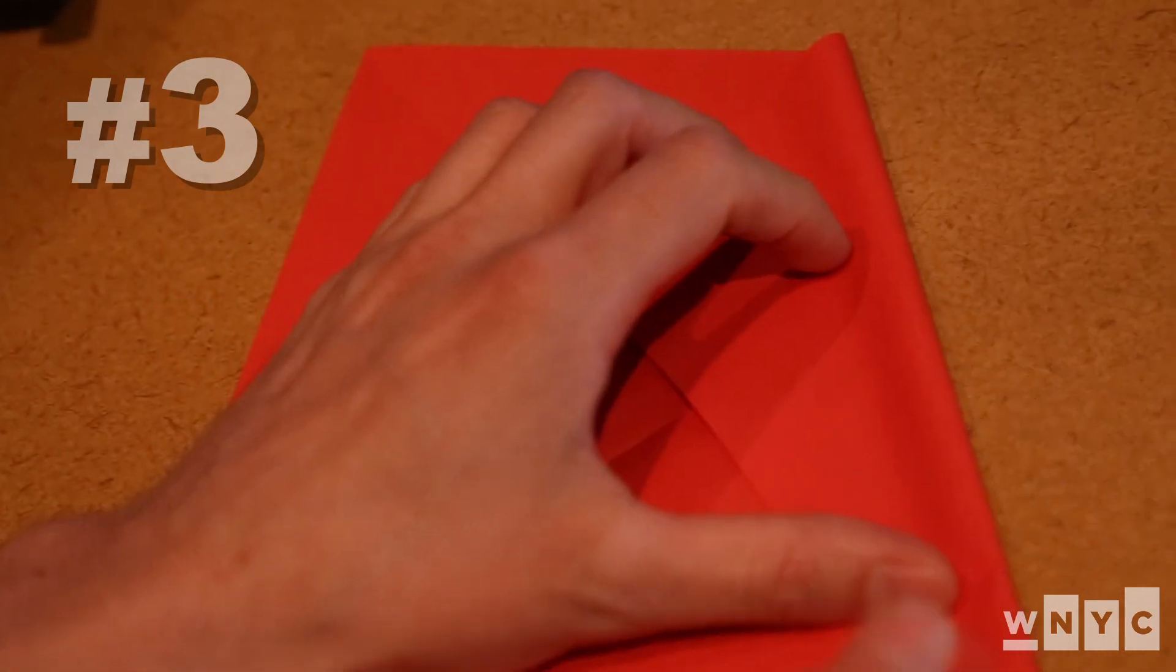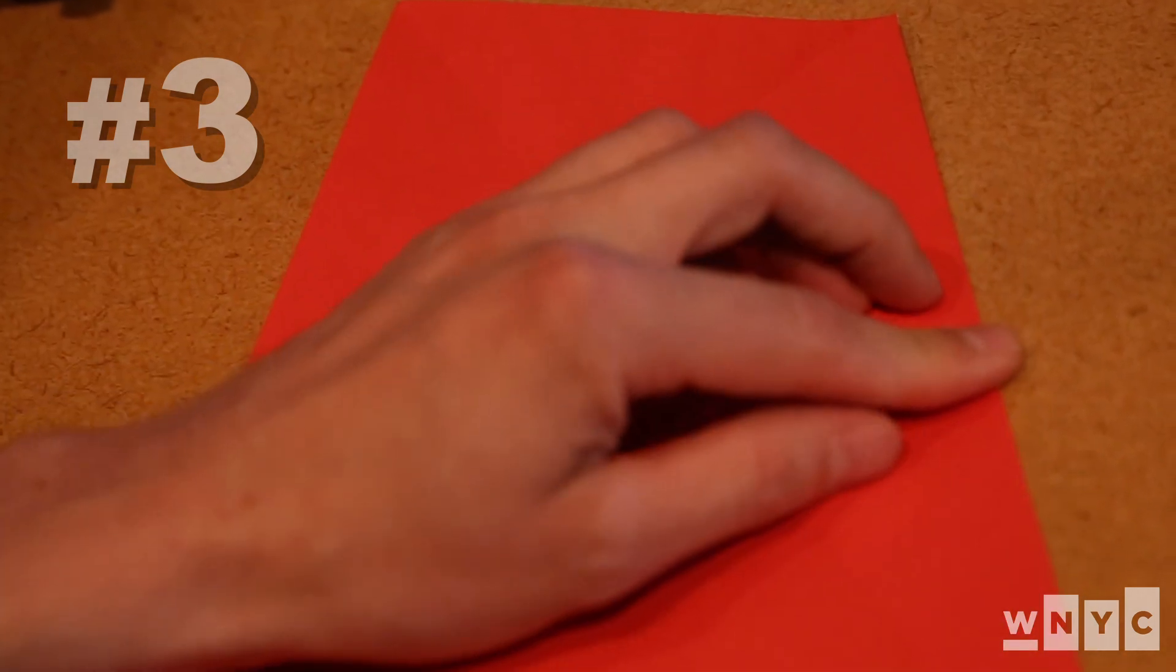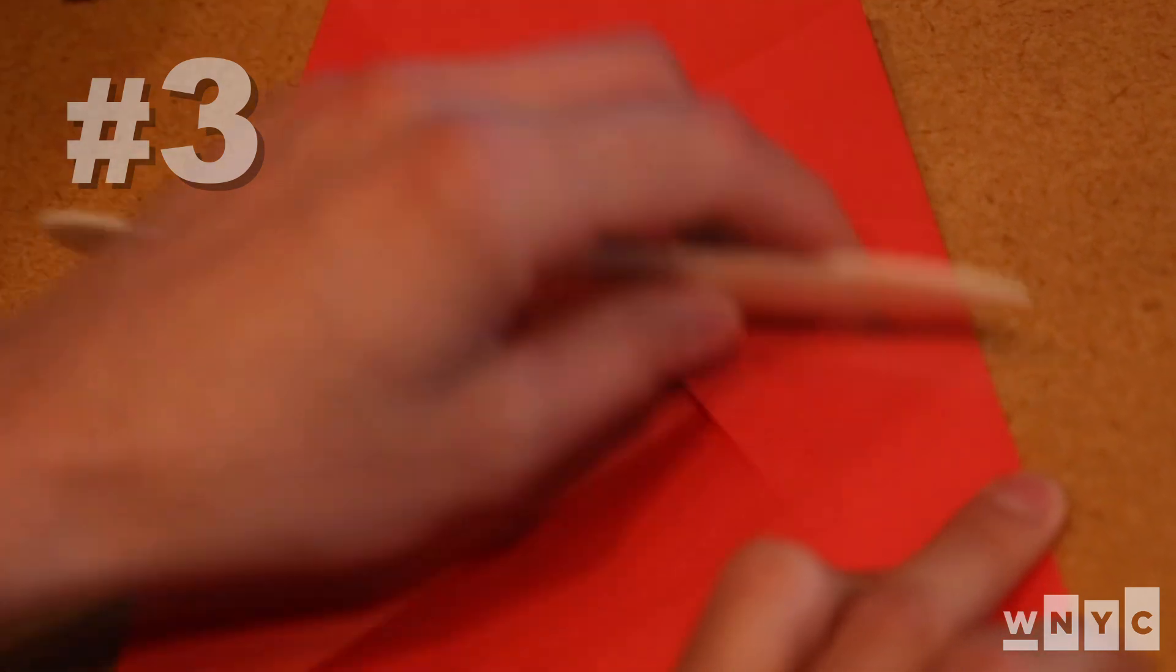We're again going to take the upper right hand corner of the page, but this time fold it down only so far that it lines up with the crease from our first fold.